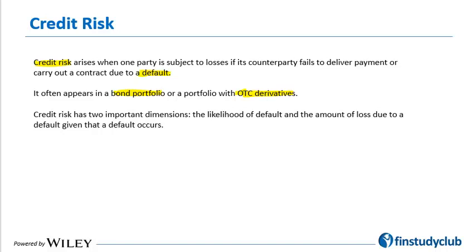Credit risk has two important dimensions: the likelihood of default and the amount of loss due to a default given that the default occurs. The likelihood of default is also known as probability of default, and the amount of loss due to a default given a default is known as loss given default. Both are important values to be taken into account to get a sense of credit risk.